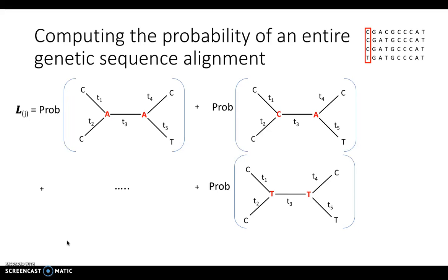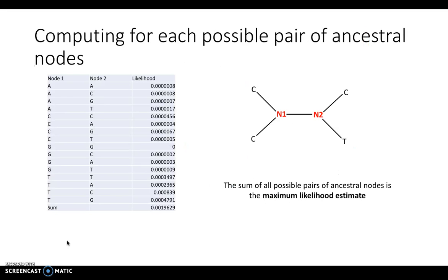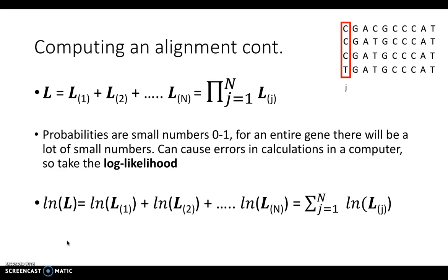We can then do the same for each column in the remaining portion of our alignment. We have a randomly selected tree with randomly selected parameters and unknown ancestral nucleotides, so for each of the 16 combinations of ancestral nucleotides we calculate the likelihood, sum them up, giving us the maximum likelihood estimation for that individual column alignment. Calculating the likelihood for each separate column gives us what we need to find the likelihood of the entire sequence alignment. Since every position in the sequence evolves independently, we combine independent probabilities by multiplying them — the overall probability of our entire alignment is found by multiplying the likelihoods for each column, i.e., the product of the likelihood for each column.